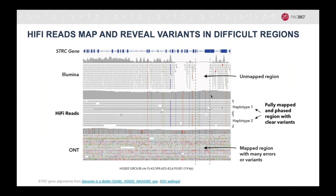Here is an example where single nucleotide variants are missed by short reads. The STRC gene, which is known to cause congenital deafness, can easily be sequenced with the alleles phased using HiFi reads, shown here in the middle. On top, the Illumina short reads have large gaps, and on the bottom, ONT long reads have many errors. The reason for the difficulty in this region is that this part of the gene, indicated with arrows and dashed lines, has a pseudogene copy that is very similar in base content, causing mapping errors between the pseudogene and the functional copy.